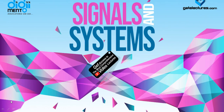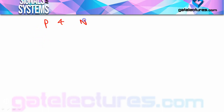Hello students. In the last video we completed the energy and power signals. Now in this video we will start with the last classification of signals, that is periodic and non-periodic signals. So first of all we will understand what is a periodic signal, in case of continuous time and discrete time.